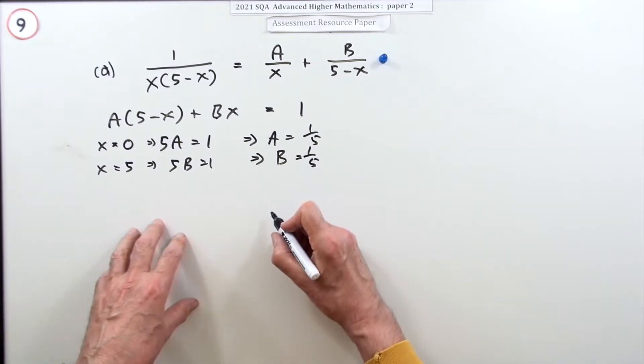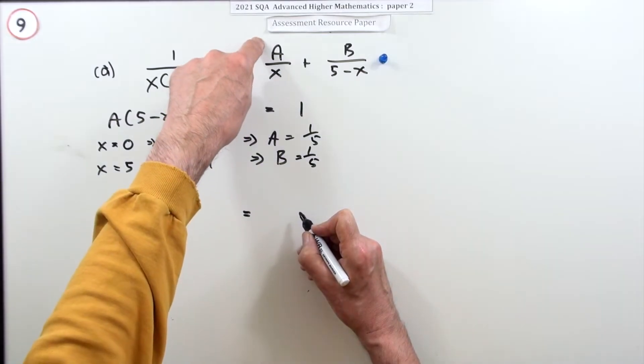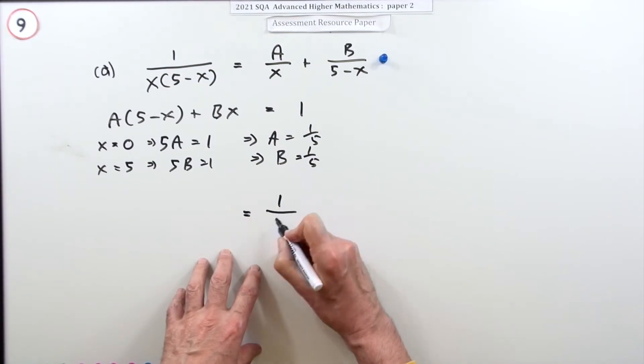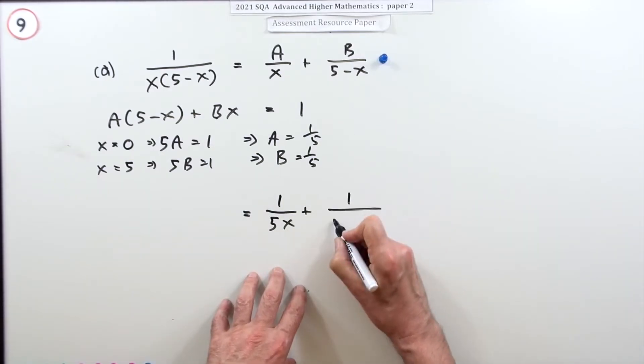So putting that back together, it means that eventually that becomes a is a fifth, so put that underneath so it'll be 1 over 5x. b is also a fifth, so it'll be 1 over 5 times (5 minus x).